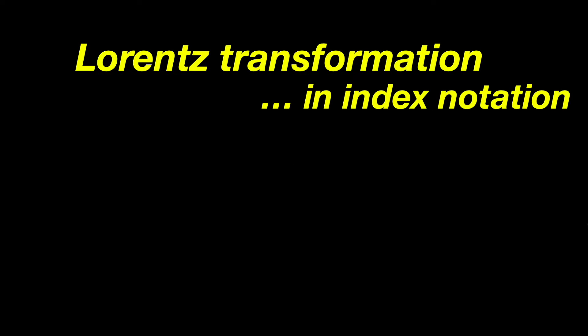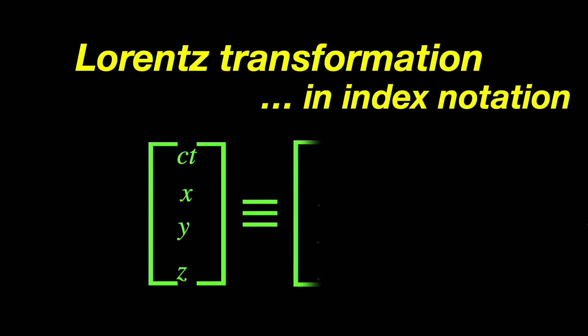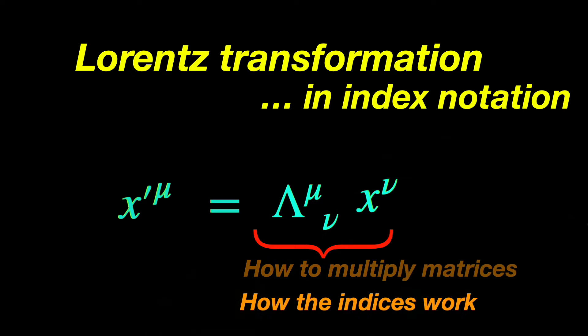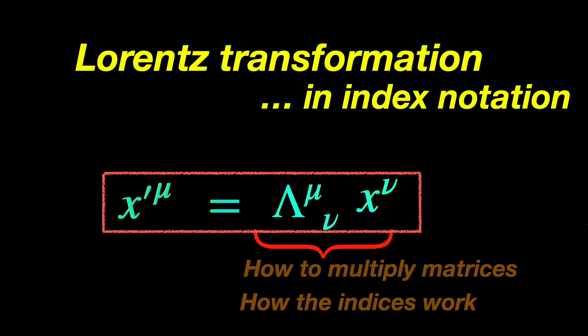The trick is to use index notation where all the spacetime coordinates are arranged into an array indexed, and then we work with the array as a whole as a column matrix and call it x mu, an indexed variable. The price we have to pay to play this trick is to learn how to multiply matrices and of course also how these indices work. In the business of special relativity, this is the mother of all tricks. It is extremely handy and is used everywhere in special and even general relativity. Though in this video we shall take the specific example of the Lorentz transformation equations, but the usage goes way beyond that.